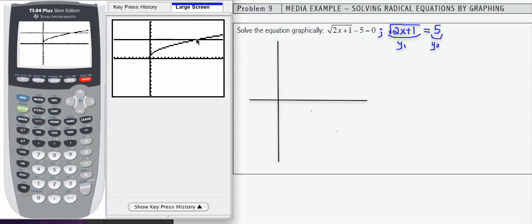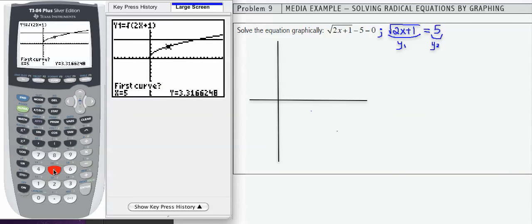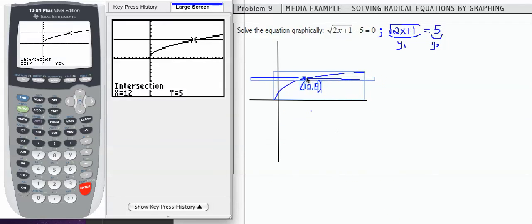So there's the intersection. I'm going to use my second calc intersect process to find the intersection. So I'm going to press enter three times, and that should give me the ordered pair 12, 5. I can put that on my graph and indicate the intersection, but remember that what I'm really trying to do here is to solve for x, so I need to identify my final solution as x equals 12.